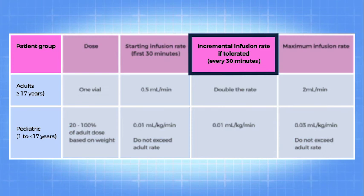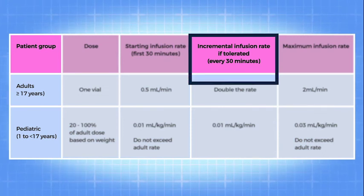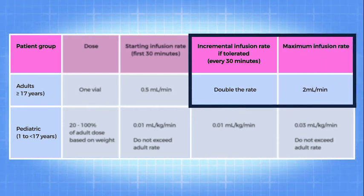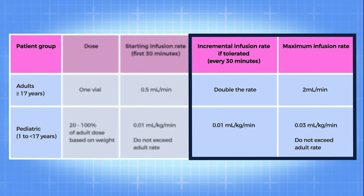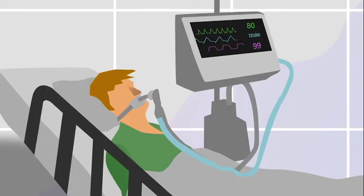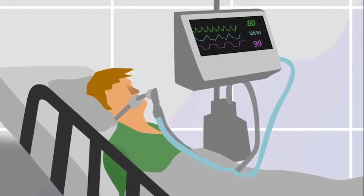If the infusion is well tolerated, you may increase the infusion rate. For adults, you may double the rate every 30 minutes to a maximum of 2 milliliters per minute. For children, you may increase the rate by 0.01 milliliters per kilogram per minute every 30 minutes to a maximum of 0.03 milliliters per kilogram per minute. Decrease the infusion rate if the patient develops discomfort or has an infusion-related adverse reaction. Do not exceed the adult rate. The infusion will take 2 to 7 hours to finish, depending on the patient's age and how well the infusion is tolerated.